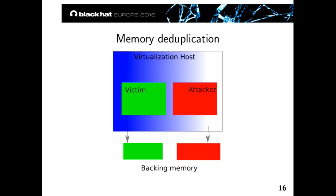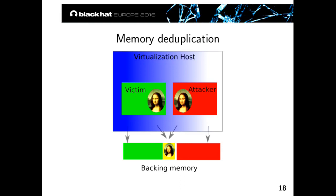What is memory deduplication and how does it work? Say we are two VMs each backed by our own private memory — different virtual address spaces, different physical backing memory, totally isolated. Now imagine we both store a copy of the Mona Lisa in memory. The host could realize this and, without any harm, deduplicate this page so we both point to the same single physical page. Nobody's the wiser, but we've saved memory. Many VM hosting providers do this because if many VMs run the same OS, they can save memory and get more customers on the same machine.